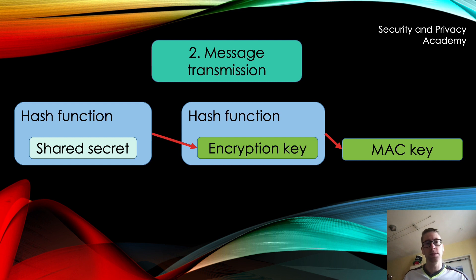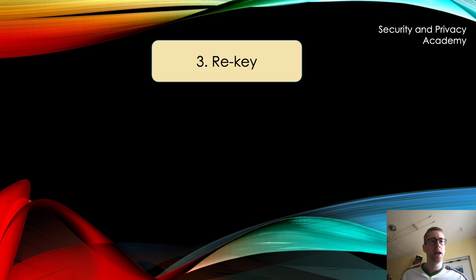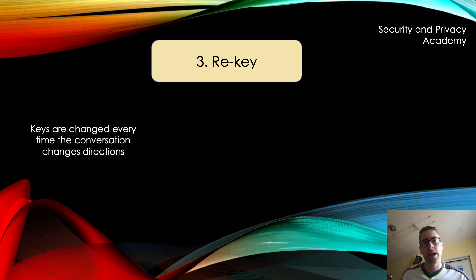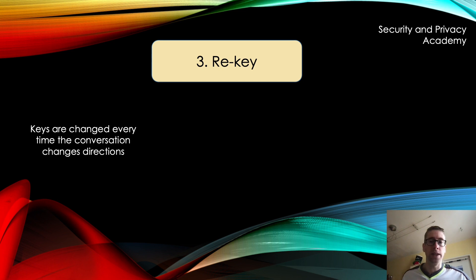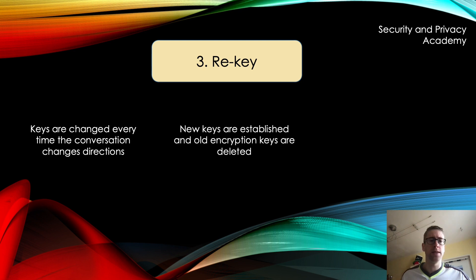The actual thing that made OTR special — and which still echoes today — is the next step, called rekey. Keys are calculated anew every time the conversation changes direction. So if Alice sends a message to Bob, the keys are changed as soon as Bob answers. Every time the conversation changes direction, the keys are recalculated. New keys are established, and old encryption keys are deleted, which ensures perfect forward secrecy.